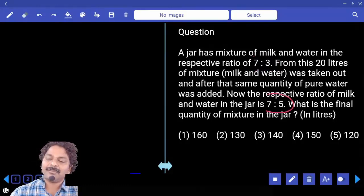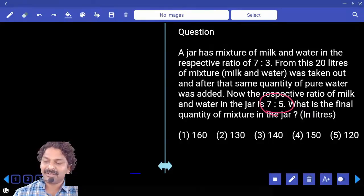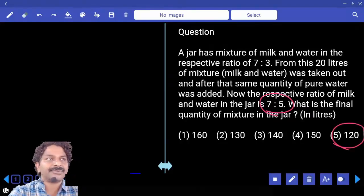In the final ratio, how many parts do we have? So it has to be a 12 multiple, and there is only one 12 multiple in the options.